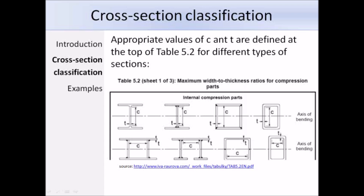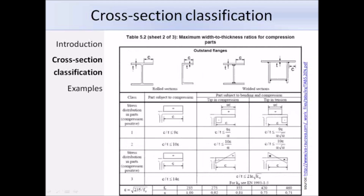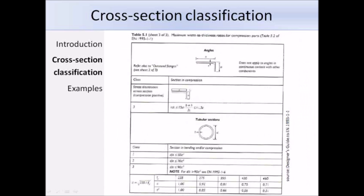At the bottom of sheet 1 are the epsilon values. There are four columns: the class (1, 2, and 3), limits for parts subject to bending, limits for parts subject to compression, and limits for parts subject to bending and compression. Sheet 2 of table 5.2 is for outstanding flanges, again with three classes and corresponding limits. Sheet 3 deals with angles and tubular sections; for circular hollow members, the width-to-thickness ratios are modified by epsilon squared rather than epsilon.